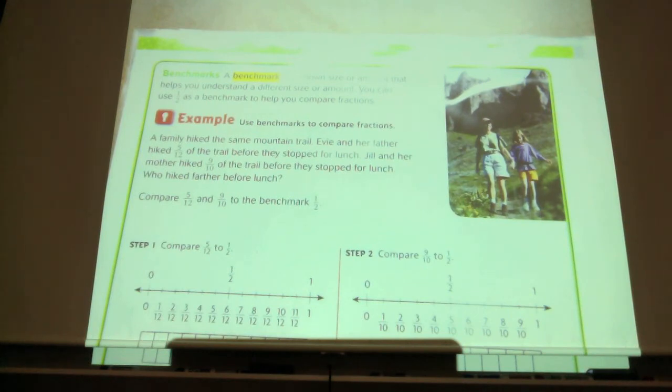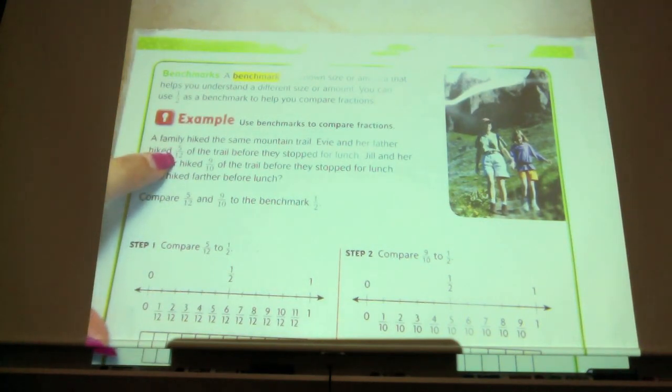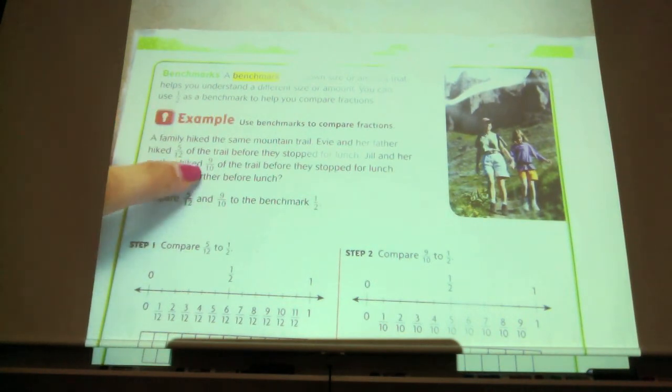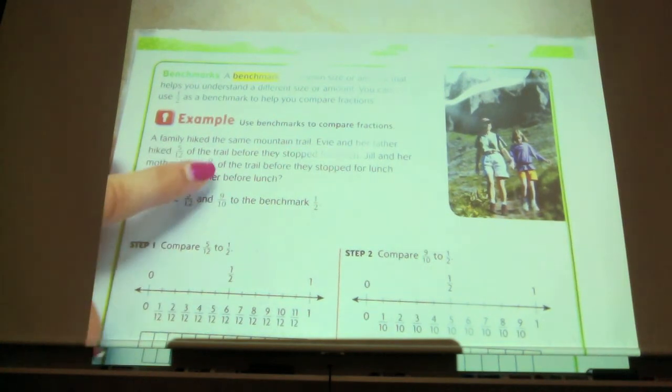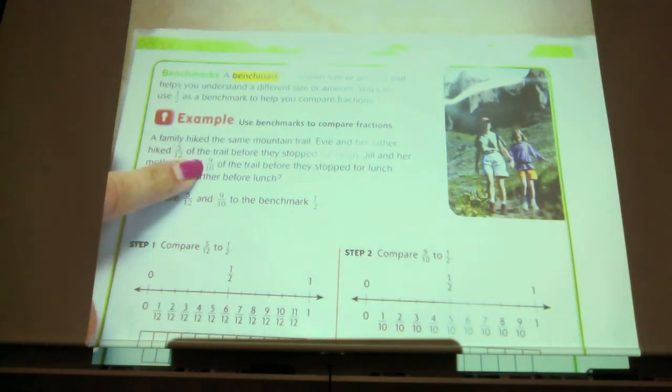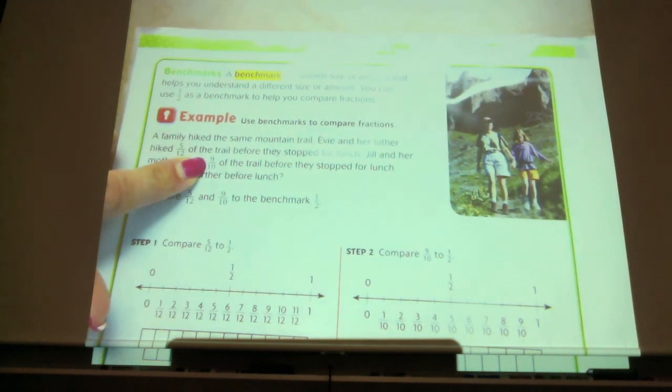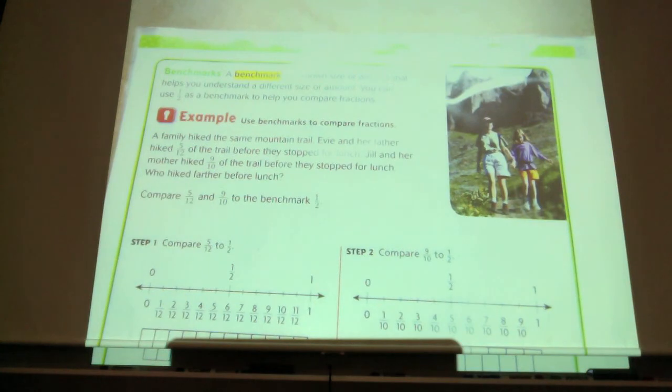Now, let's look at the example one. It says, a family hiked the same mountain trail. Evie and her father hiked five-twelfths of the trail before they stopped for lunch. Jill and her mother hiked nine-tenths of the trail before they stopped for lunch. Who hiked farther before lunch? Now, are either one of those a half? No. I can look at five-twelfths. Half of twelve would be six, so I know that that's not an equivalent to a half. Is nine-tenths equivalent to a half? No. So neither one of those is a half. However, you can compare each one to a half and see where they fall.